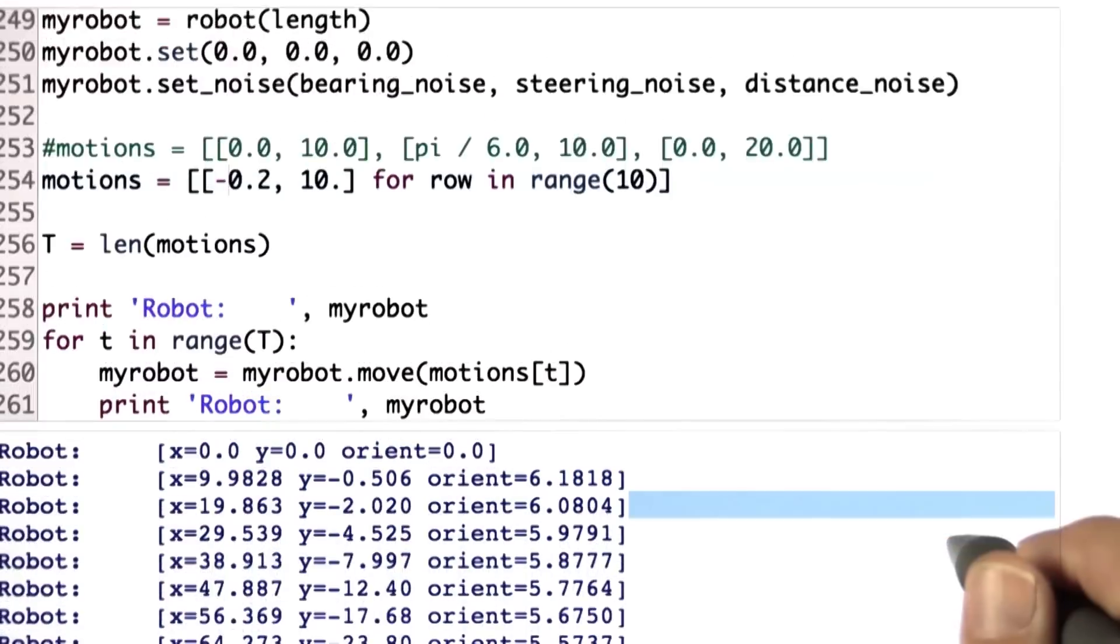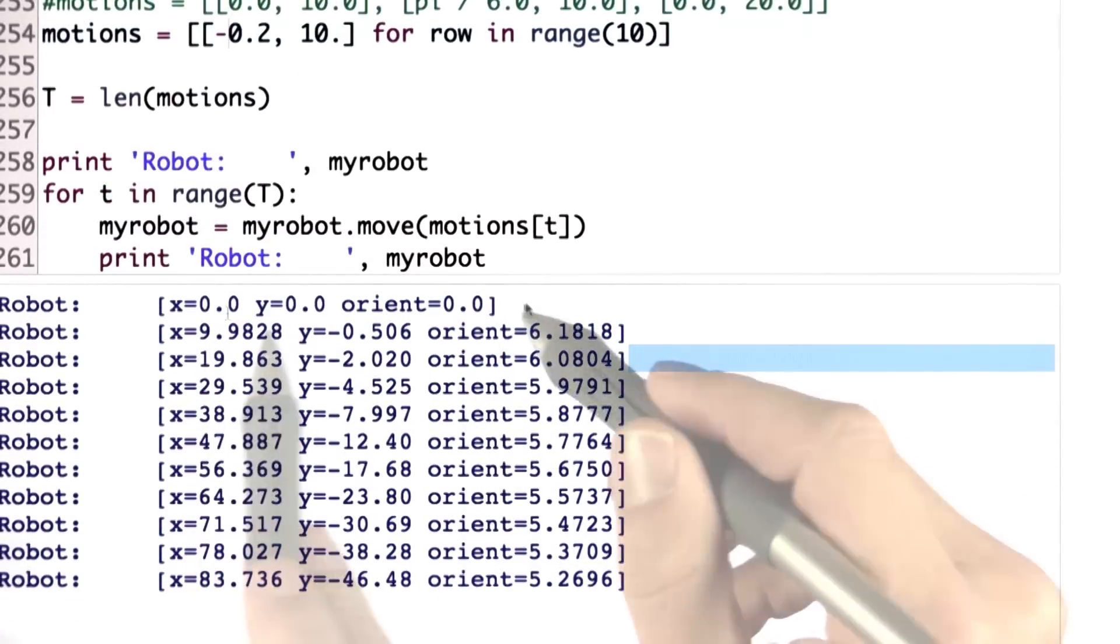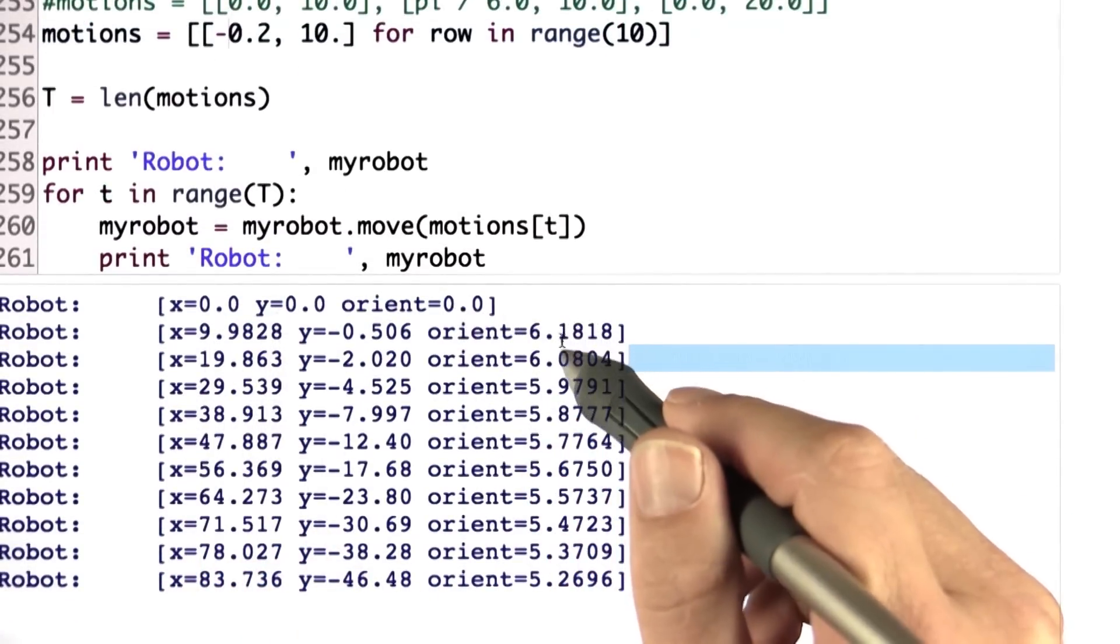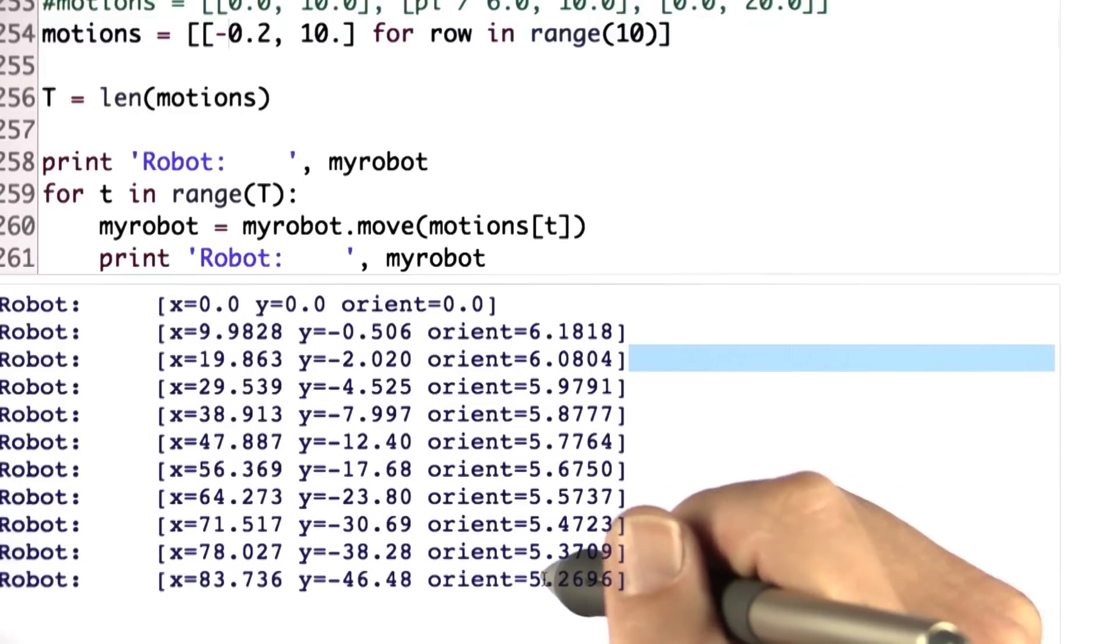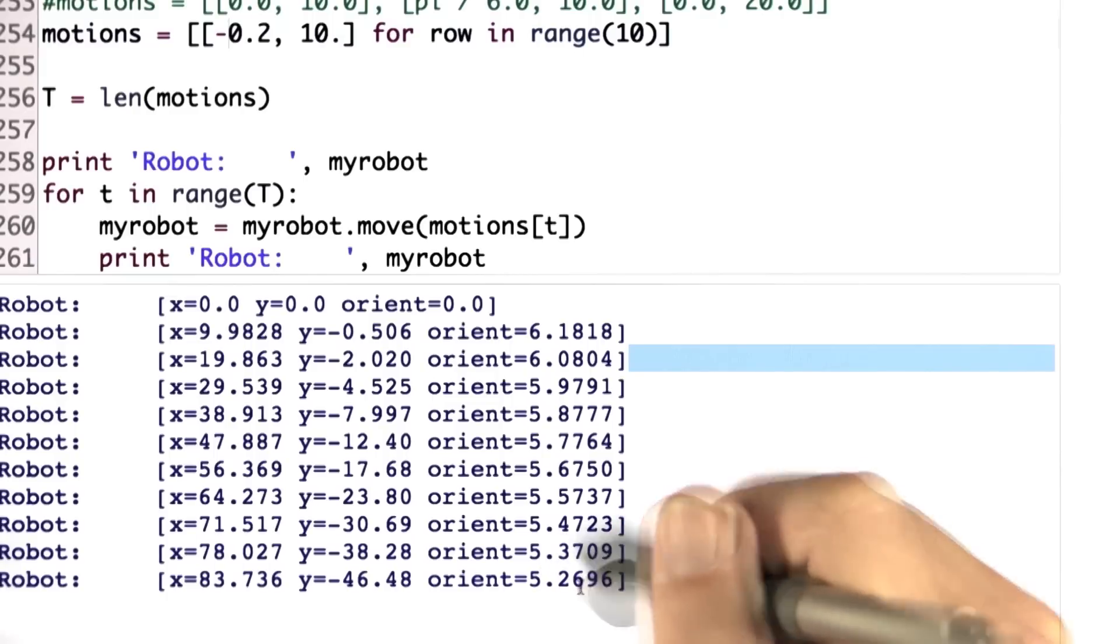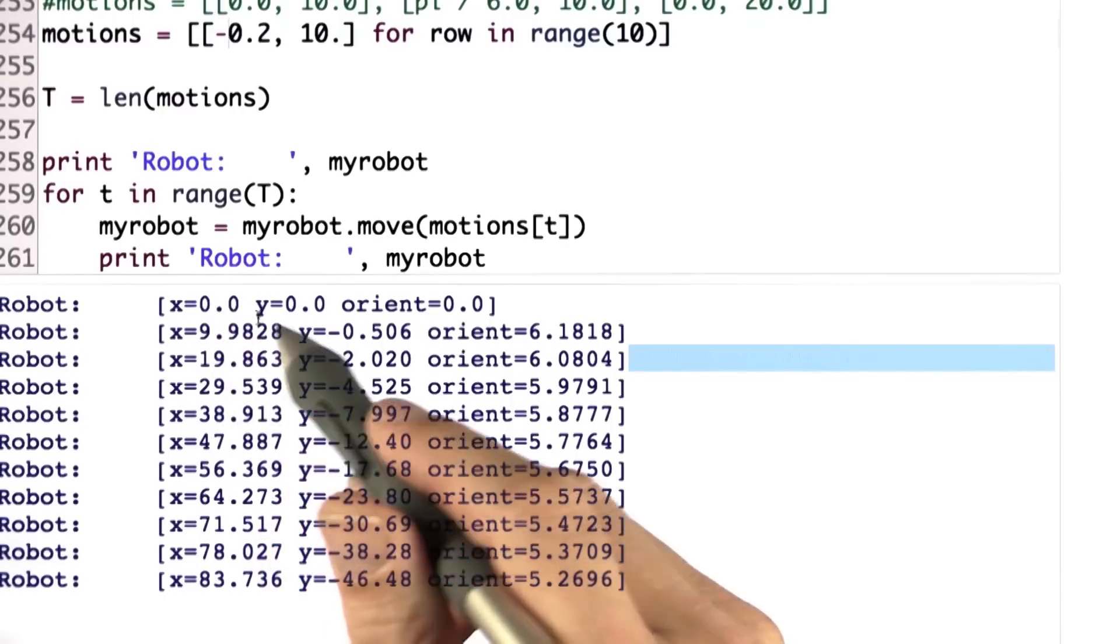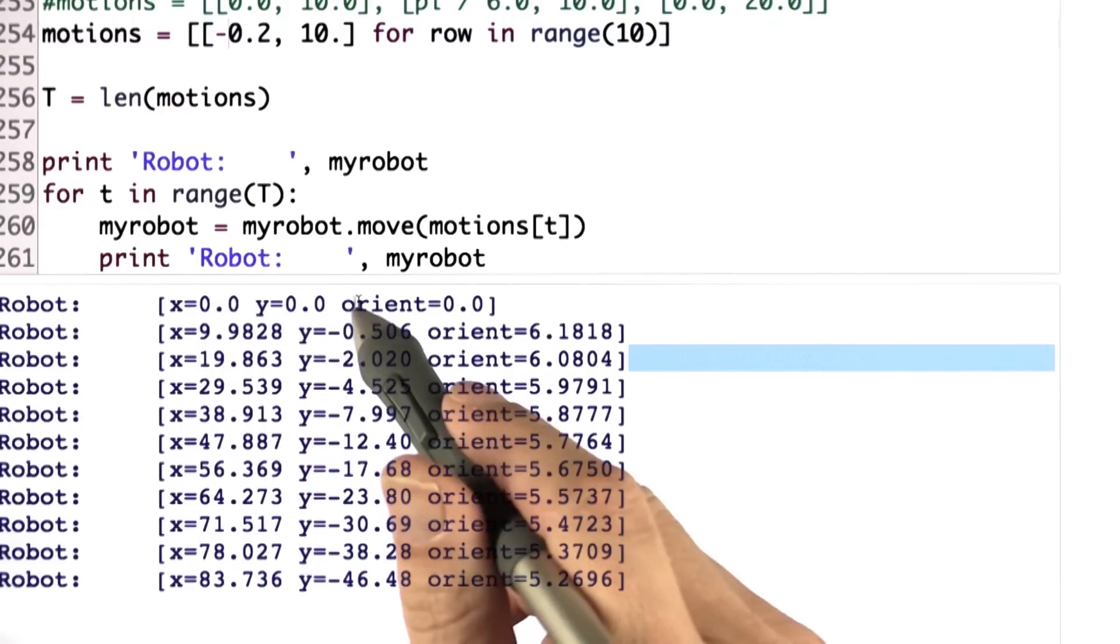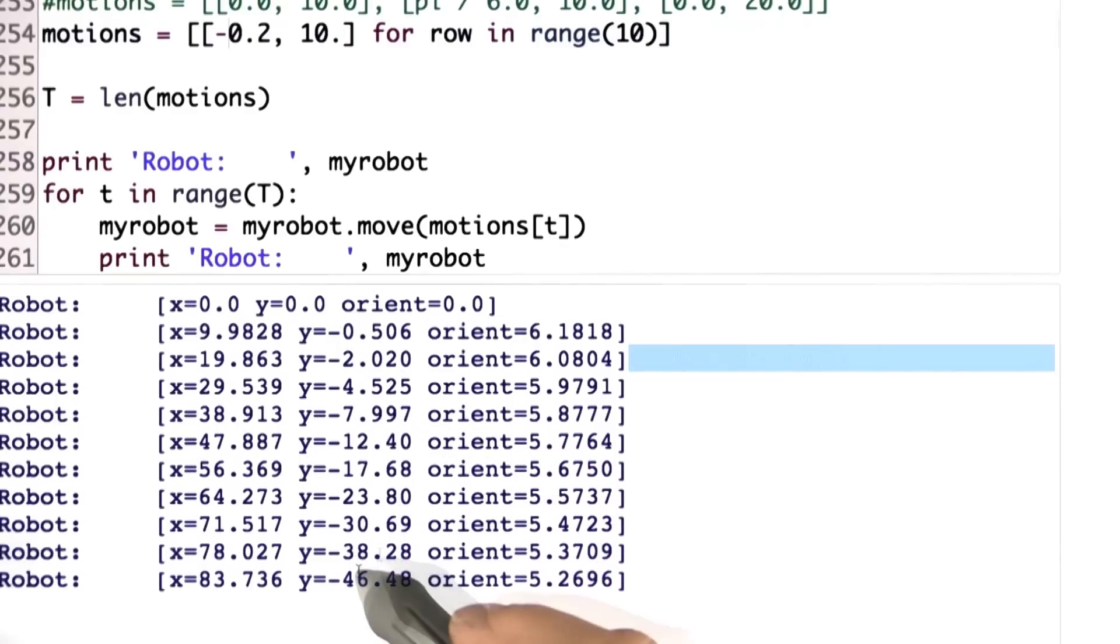And we look at the outputs. Then we get the following array. You can see that the orientation starting at 0, which is the same as 2pi, decreases all the way to 5.26. And you can also see the robot starts running in a circle. Whereas initially, we add almost 10 to the x direction, almost nothing to the y direction. As we come down here, we subtract quite a bit in y direction, because now the robot is going on a circle.